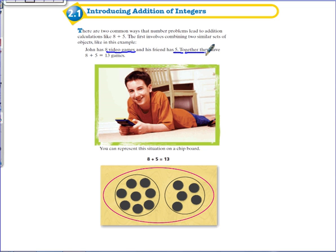John has 8 video games and his friend has 5. Together they have 8 plus 5, which is 13 games. We can represent this situation using a chip board, starting with 8 positive integers and adding to it or combining with it 5 more positive integers to give us a total or a sum of positive 13.